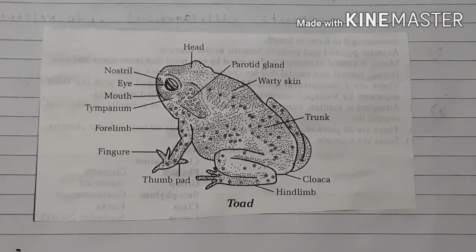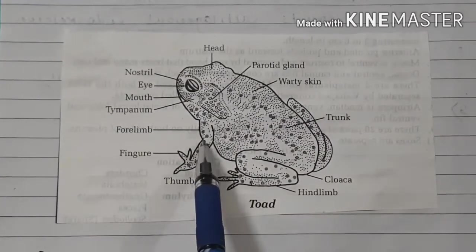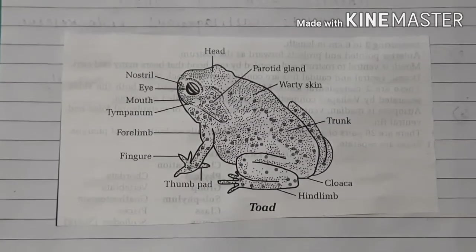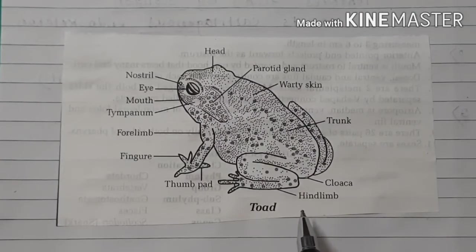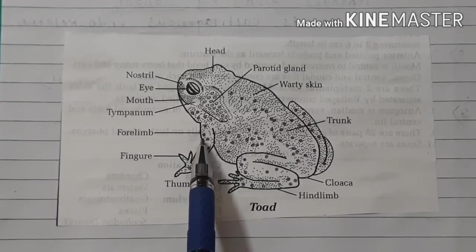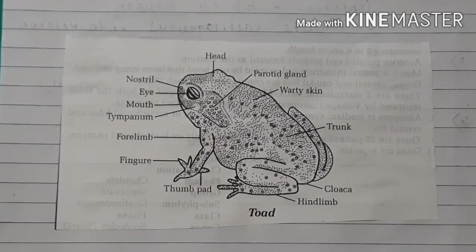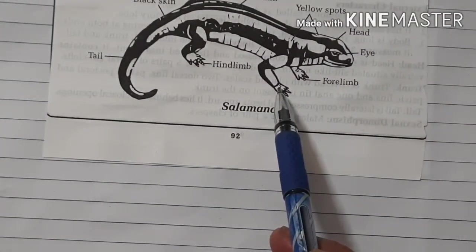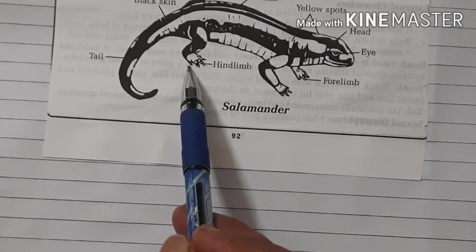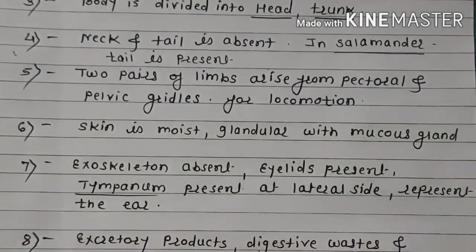The pairs of limbs arise from the pectoral girdle and pelvic girdle. The pectoral girdle consists the forelimbs — forelimbs arise from the pectoral girdle. The pelvic girdle consists the hind limbs. Limbs are useful for locomotion.